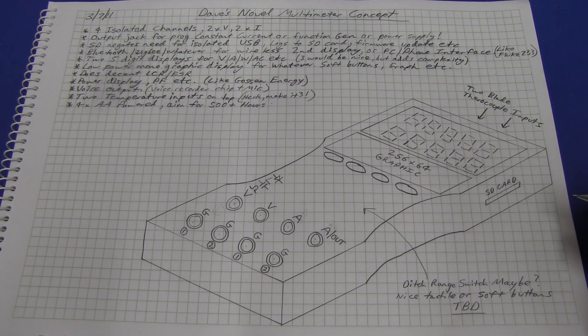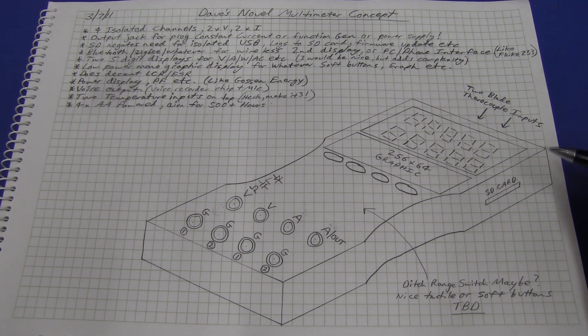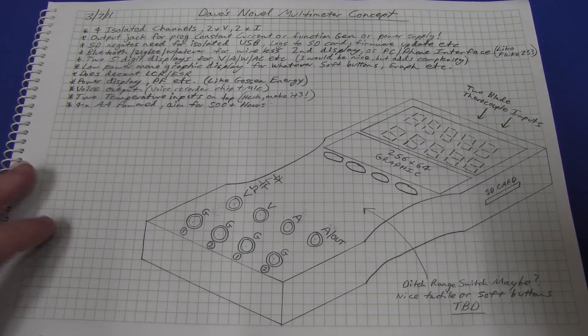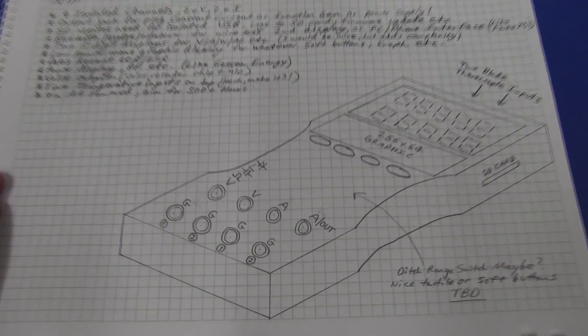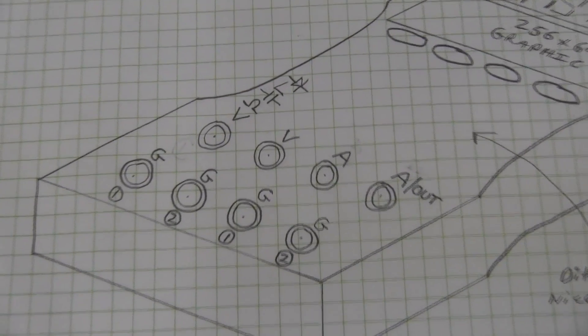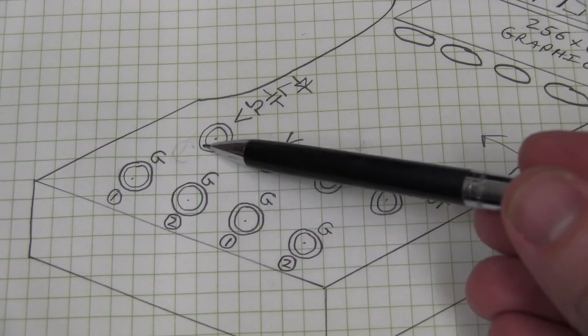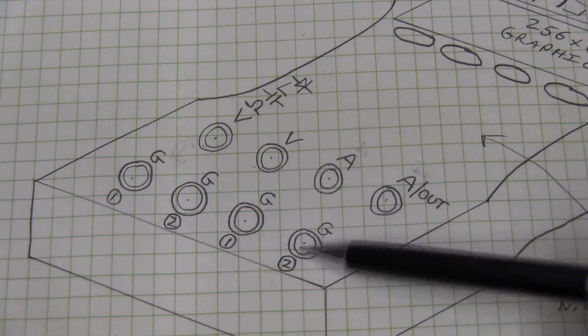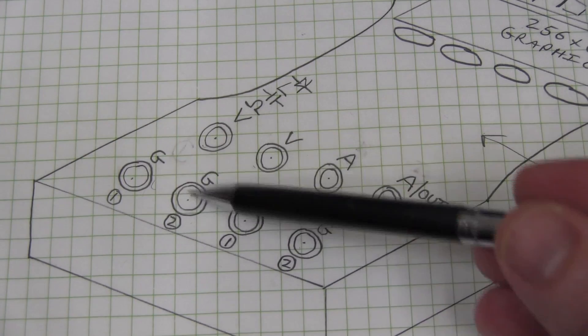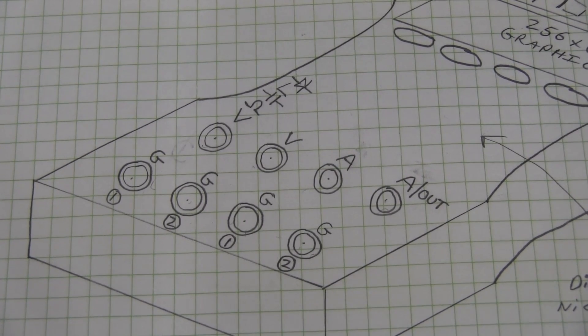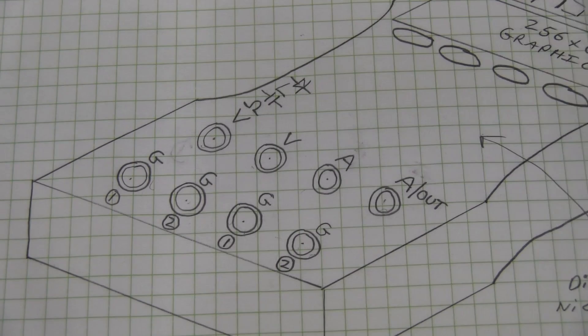So I present to you Dave's kind of novel multimeter concept. This is what I came up with very quickly. I haven't slept on it, but I just thought I'd come up with something different. What have we got here? Well, you'll notice one of the main things is we've got multiple input jacks here. In fact, we've got four separate channels all with their own separate grounds. So it's basically a totally isolated, by the way, four channel isolated multimeter.